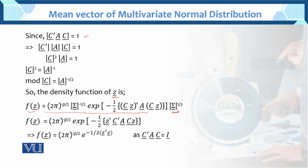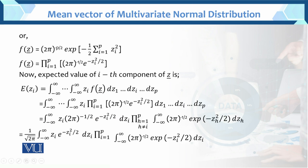Yeh hamaara ab transformed PDF aa gaya. Isko solve kiya — Sigma cancel out ho gaya, 2 pi to the p by 2, exponential of this value. Transpose C prime transpose A, C — we know that C prime AC which is equals to identity, toh hamare paas aa gaya exponential of minus 1 by 2 Z prime Z. Ab Z prime Z ko hamne likha as sum i varies 1 to p of Z_i squared. Ab yeh p terms hain, toh hum usko product mein likh sakte hain — capital pi, i varies 1 to p, 2 pi, 1 by 2, e raised to minus Z_i squared by 2.